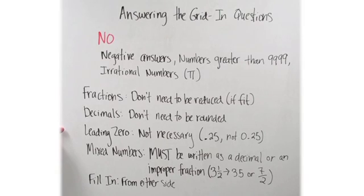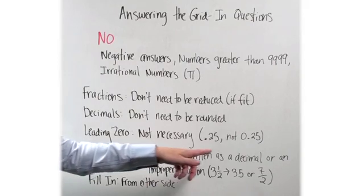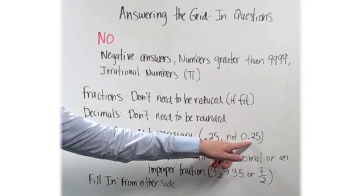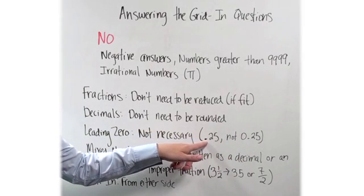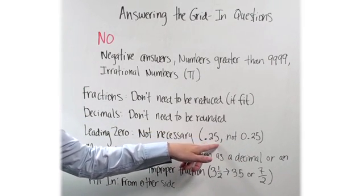You don't have to put a leading zero on your decimal answers. What I mean is this zero in front of the decimal point is called a leading zero. You don't need it. You can just start with your decimal point and fill in your numbers.